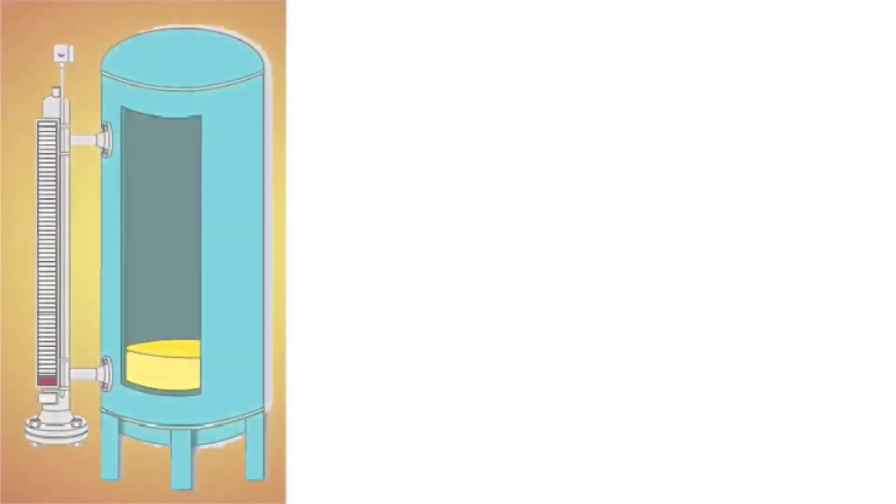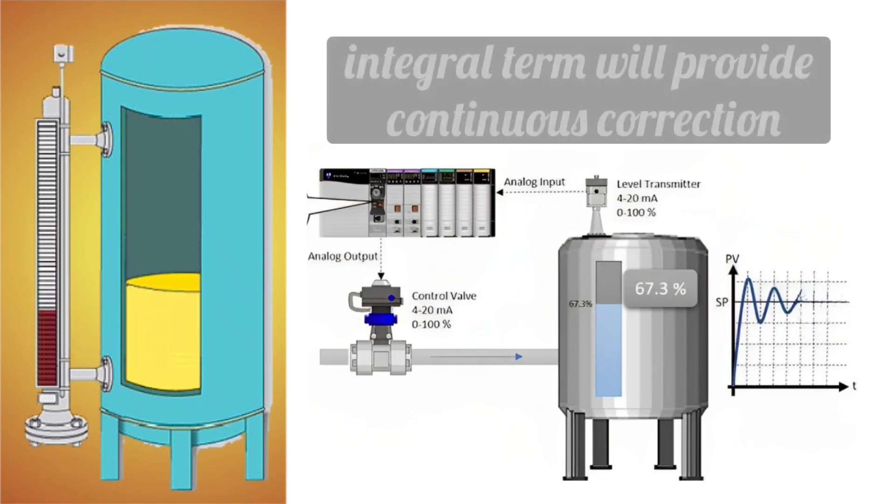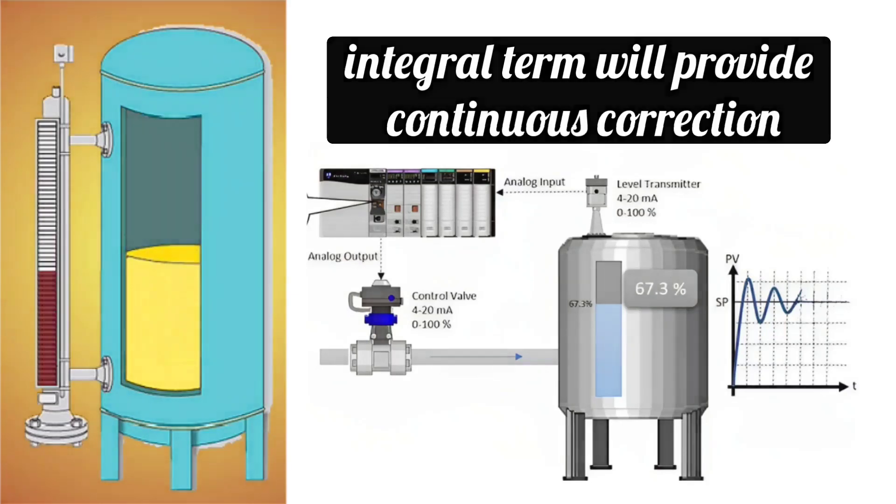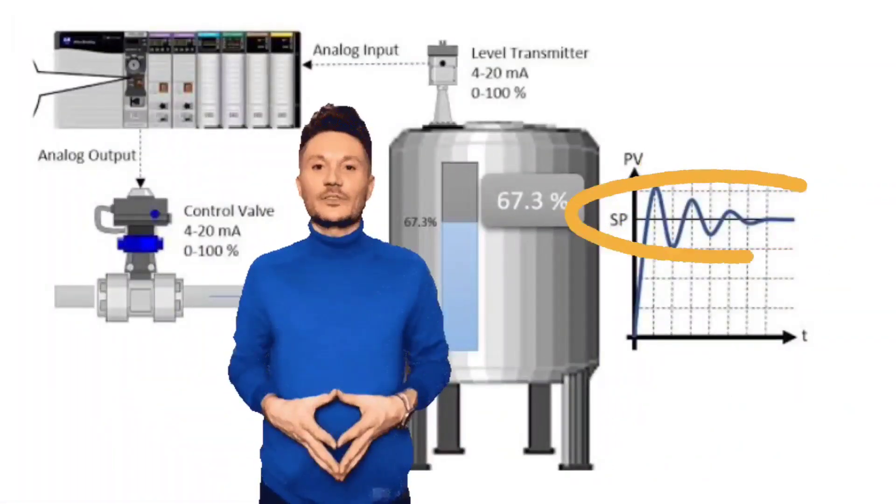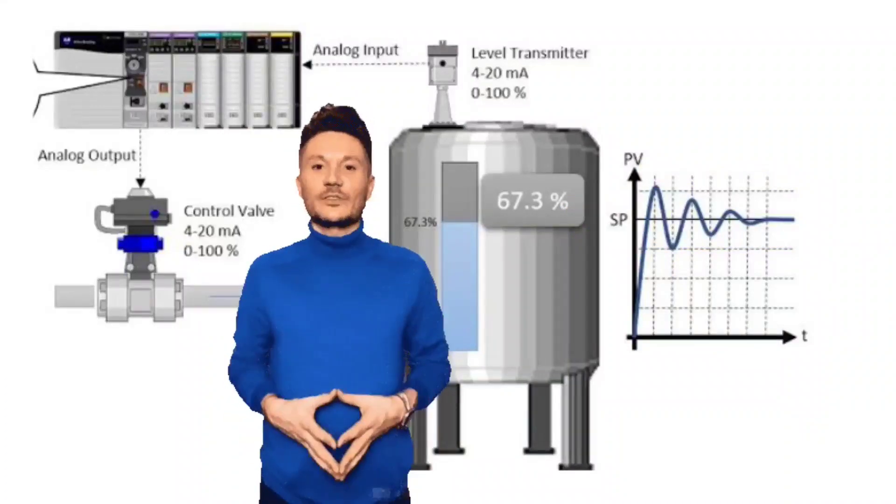If we are controlling the level of the tank and the level is not near the set point, then the integral term will provide continuous correction so that the level becomes equal to the set point. There can be some other parameter instead of level.